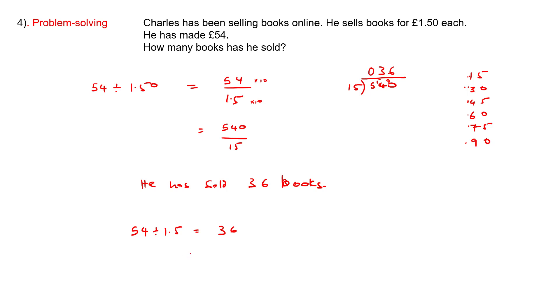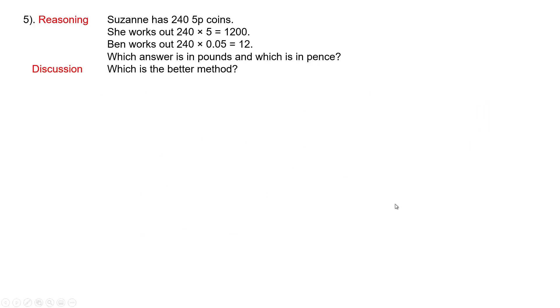Here we've got Suzanne - she's got 240 5p coins. She works out 240 times 5, which equals 1200. Then Ben works out 240 times 0.05 equals 12. Which answer is in pounds and which is in pence?